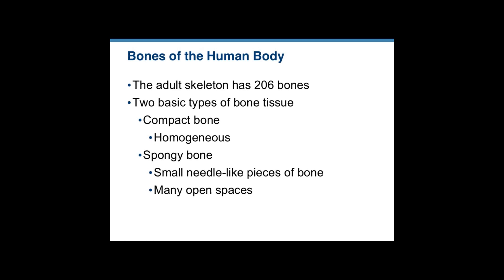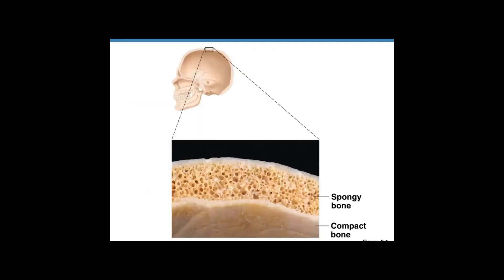In bone tissue there are basically two different types: either compact bone or spongy bone. Looking at the pictures here, you can easily tell the difference. It's pretty self-explanatory why spongy bone is called spongy and compact bone is called compact.